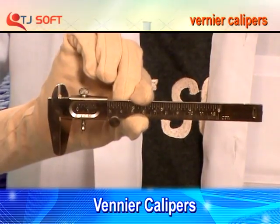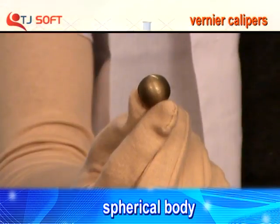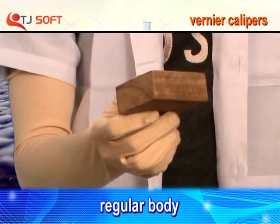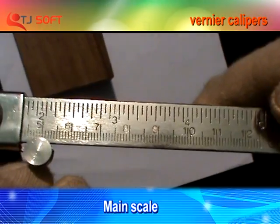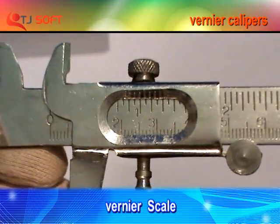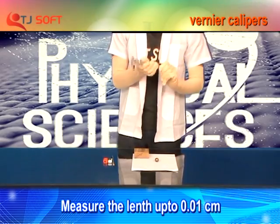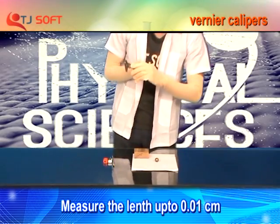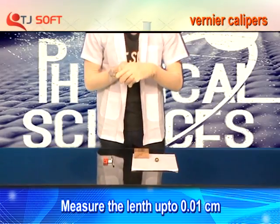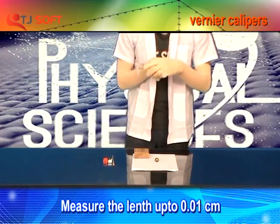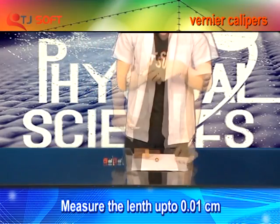Vernier Calipers, spherical body, and a regular body. Vernier Calipers has two scales: main scale and Vernier scale. By using the Vernier Calipers, we can measure the length up to 0.01 cm.